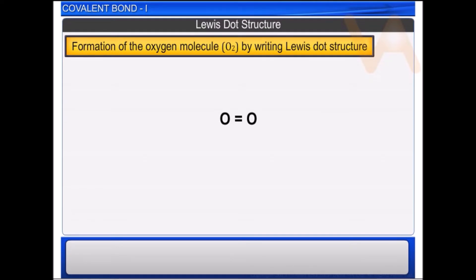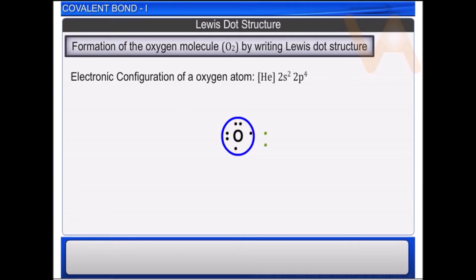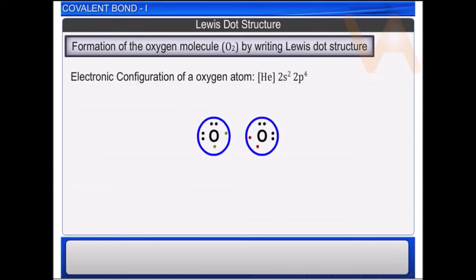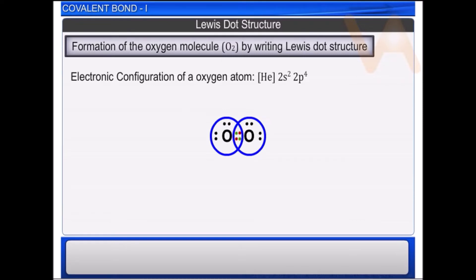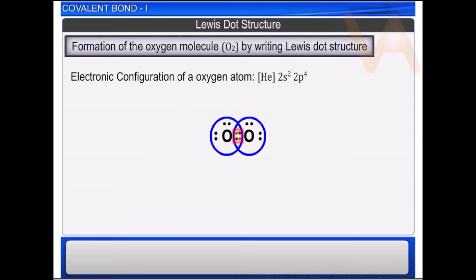Let us understand the formation of the oxygen molecule by writing the Lewis dot structure. The electronic configuration of oxygen atom is helium 2s² 2p⁴. It has 6 electrons in its valence shell; hence it needs two more electrons to attain octet. When two oxygen atoms approach each other, each contributes two electrons for sharing. Both oxygen atoms mutually share these two electron pairs and attain the nearest octet configuration of neon. As four electrons in two electron pairs are shared, the two oxygen atoms combine by a double bond in the oxygen molecule.